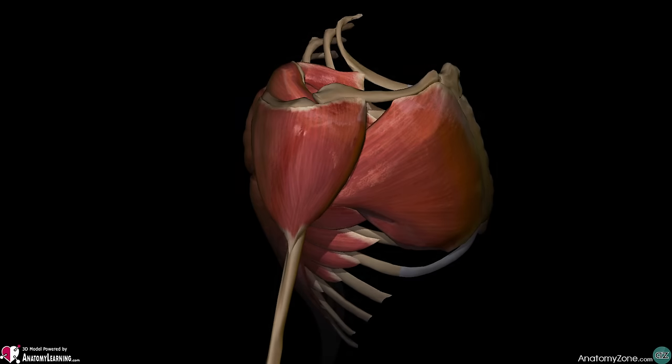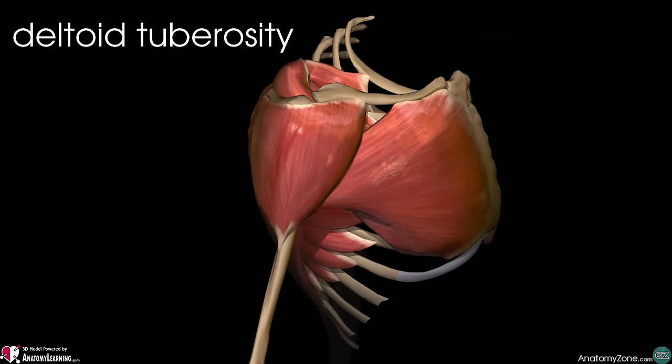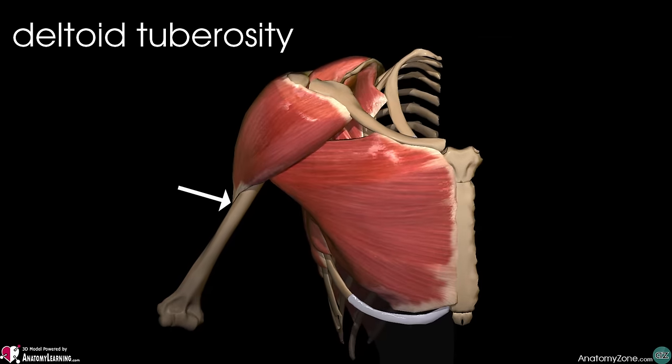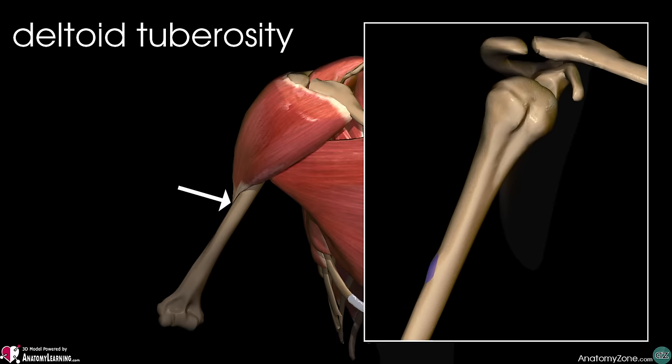The fibres of the deltoid muscle converge to form a short tendon which inserts onto the deltoid tubercle or deltoid tuberosity on the lateral aspect of the humerus.